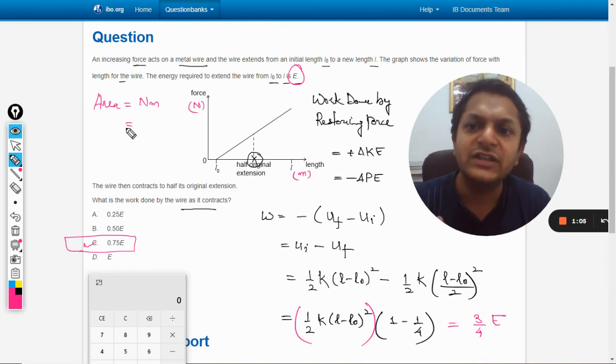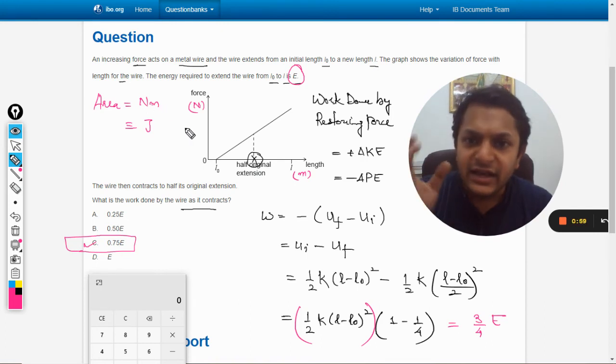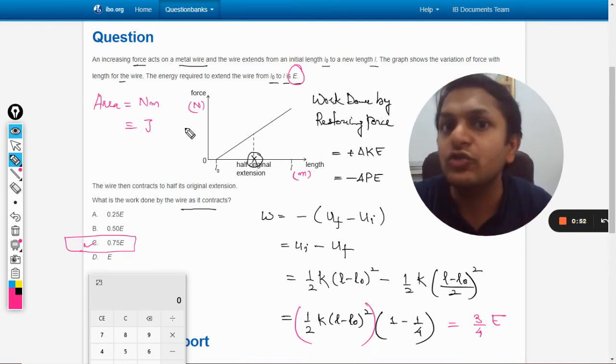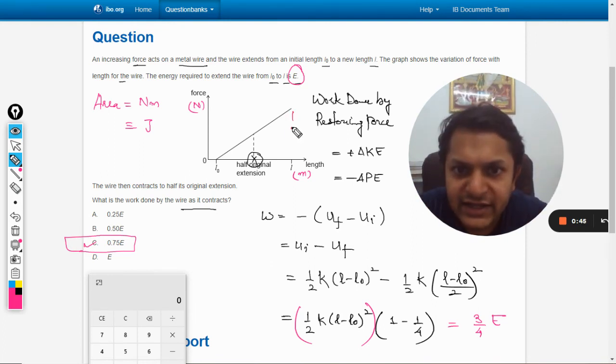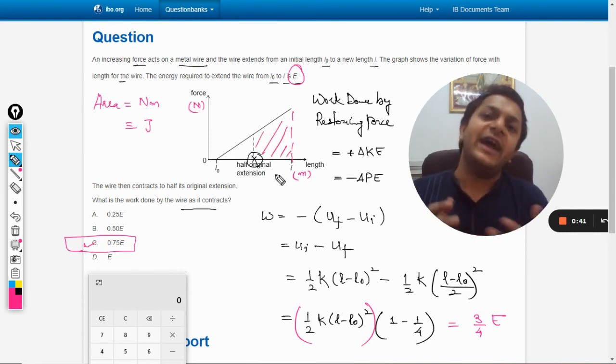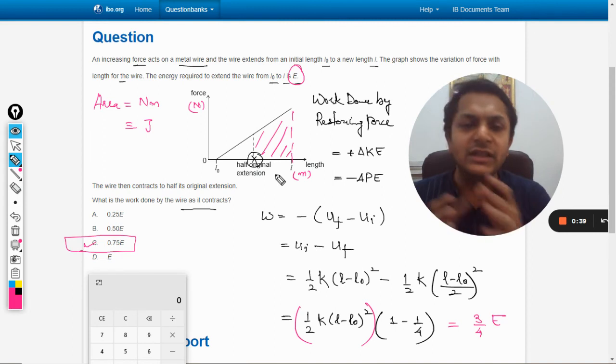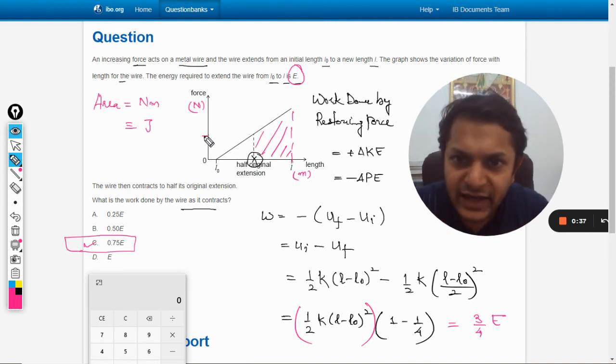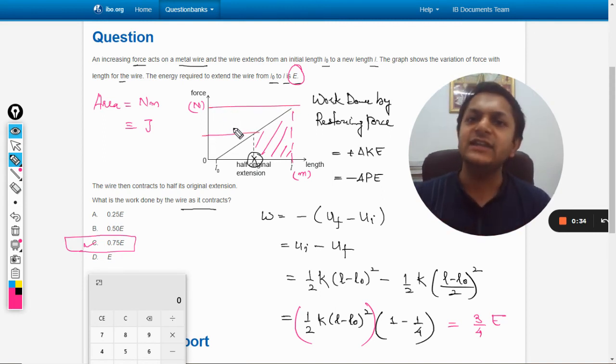I can say that the area under the curve will be either the energy or the work, because the SI unit is joule. In this case, we are finding the area of this. Now the problem in this graph is that these y-axis values are not given to us; that is why we are not able to find the area directly.